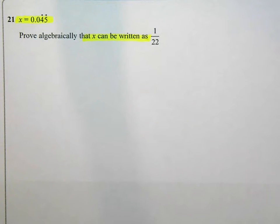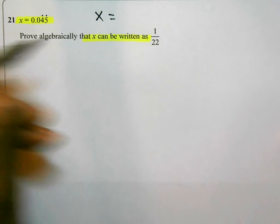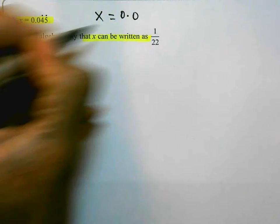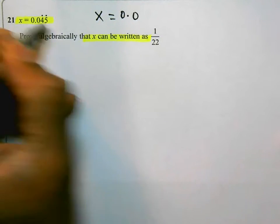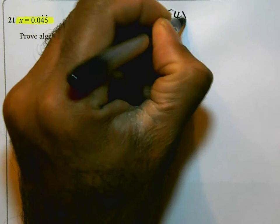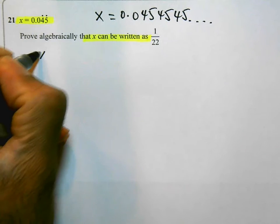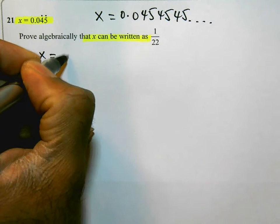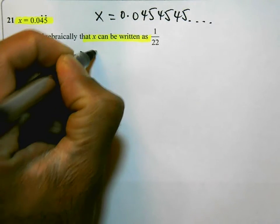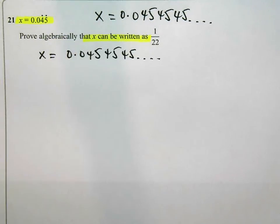Now this should be a technique and a method that you are familiar with. One thing I would say first is that x is actually equal to 0.0, now 45 with the dots above them means that it's 454545, just that carries on and on. So I'm going to use that fact, I'm going to start off with the fact that x is equal to 0.0454545 and that's recurring.